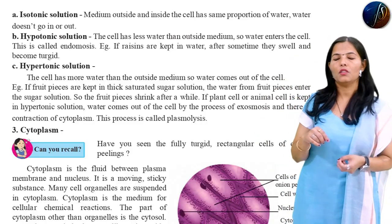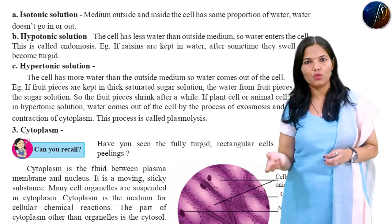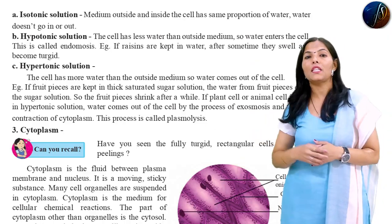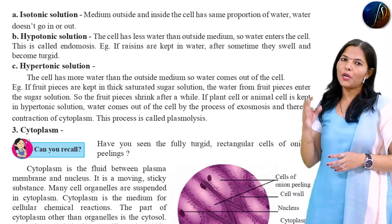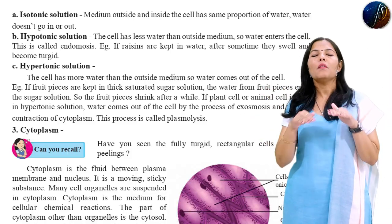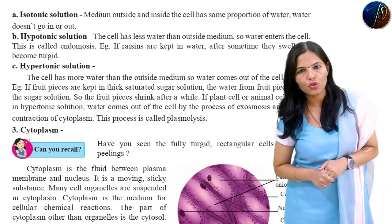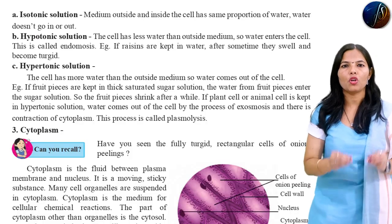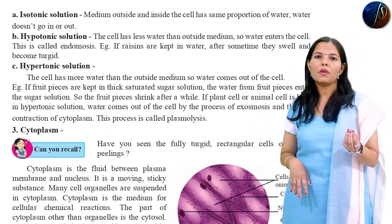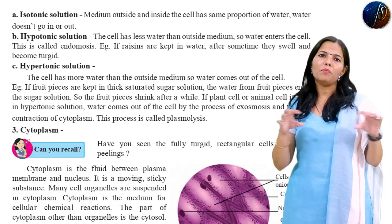The saturated sugar solution: the water from the fruit pieces enters the sugar solution — that means the sugar solution is the hypertonic solution. So I think hypertonic solution is clear. Isotonic solution means the inside and outside medium are the same — same proportion of water — water doesn't go in or out.